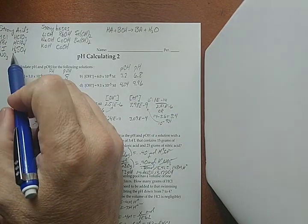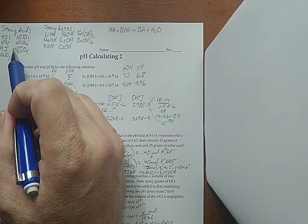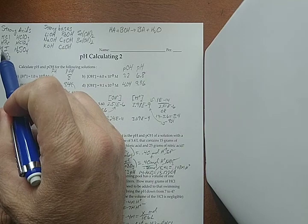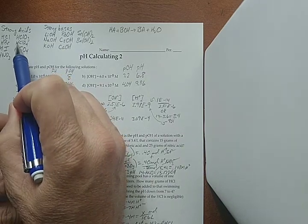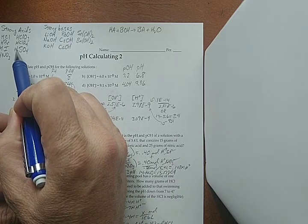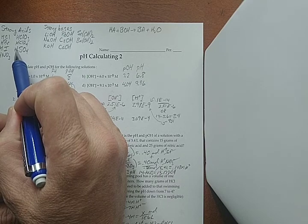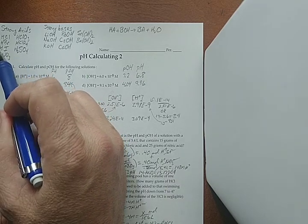Acids are things that give away H+. This is our list of strong acids. If you put these in water, all the H+ will come off. Every one of the H+, at least the first H+ here - I know there are two of them - the first one at least will come off 100% in water.